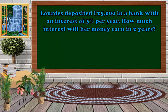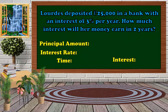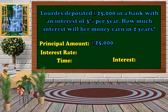Another example: Lord has deposited 25,000 pesos in a bank with an interest of 3% per year. How much interest will her money earn in 2 years? This is an interest problem. The principal amount is 25,000 pesos — that is the original amount deposited in the bank. The interest rate is 3%.